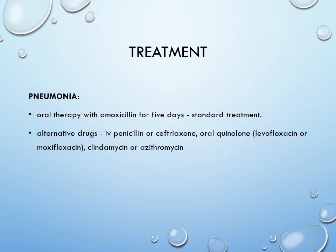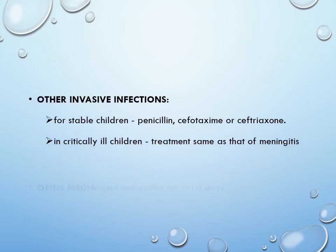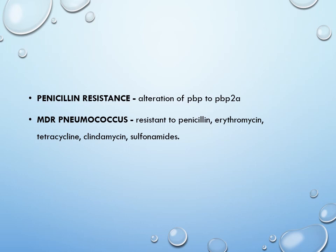For treatment of pneumonia, oral amoxicillin for five days is the standard treatment. Alternatively, ceftriaxone or from the quinolone group moxifloxacin, levofloxacin, clindamycin, or azithromycin can be used depending on AST findings. If S. pneumoniae is causing meningitis, mortality is very high so treatment should start as early as possible: ceftriaxone or cefotaxime with or without vancomycin for 10 to 14 days. For other invasive infections, amoxicillin for 7 to 10 days. MDR pneumococcus refers to resistance to penicillin, erythromycin, tetracycline, clindamycin, and sulfonamides.